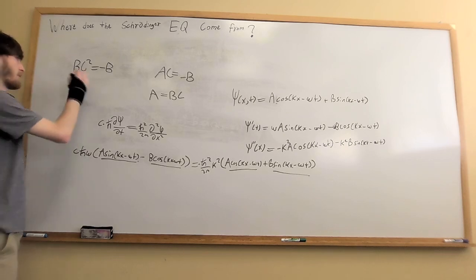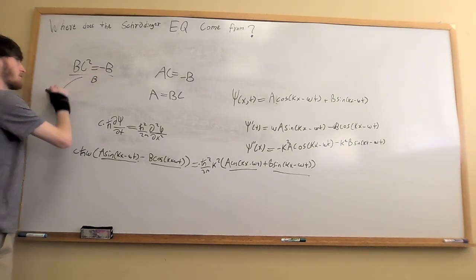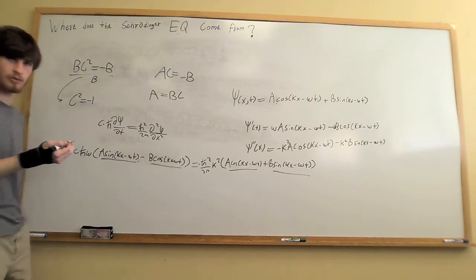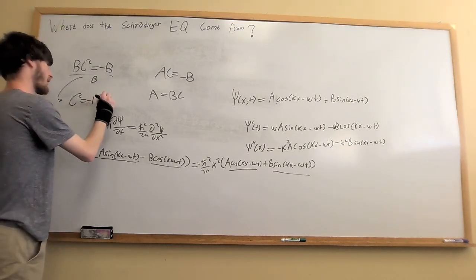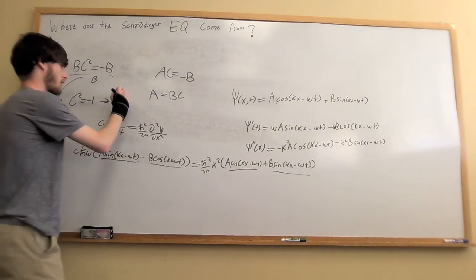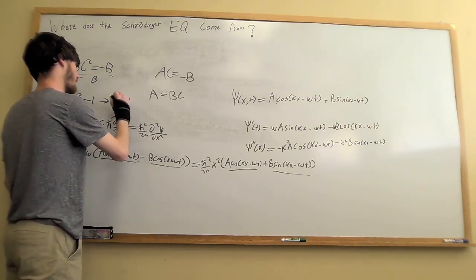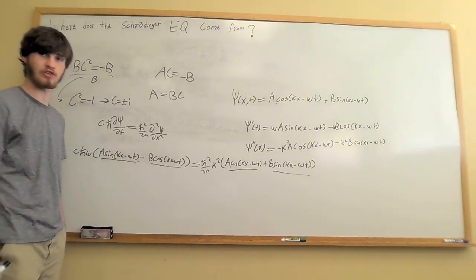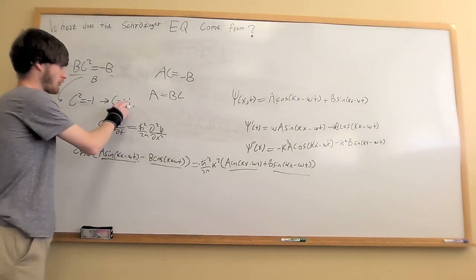If we plug in A to the other side, we'll have BC squared equals negative B. We'll divide by B, we get C squared equals negative 1. So now we have two answer choices for C, being plus or minus i. Experimentally, it was eventually figured out that we're choosing the minus i.